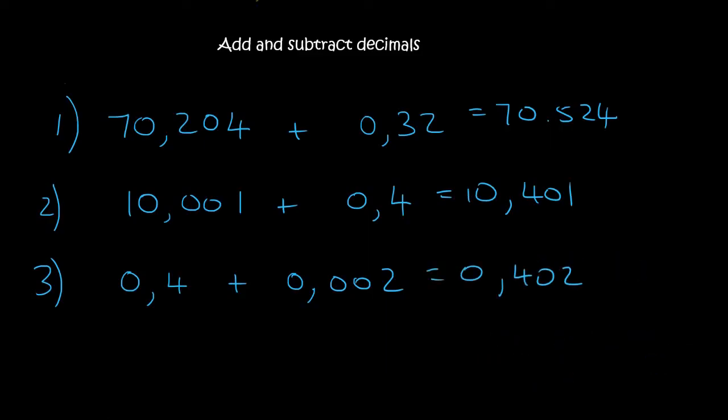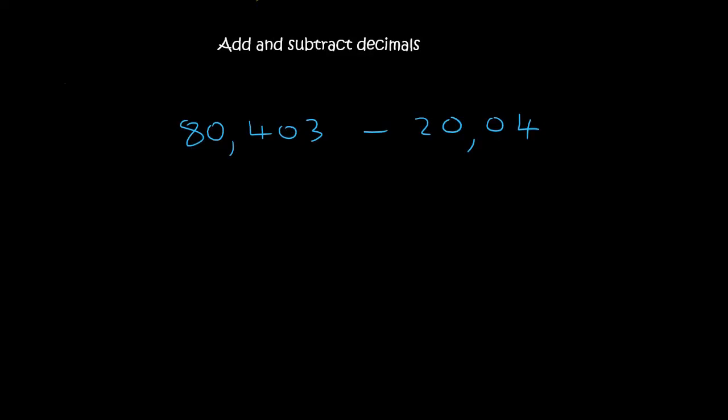We're now going to look at subtraction. So subtraction works the same. You put your two commas and then you just fill in the number. 80. And then 403. Then you fill in the other one. 20. And then 04. Always from the comma. Then if there's anything missing, you put a 0. Now we are subtracting.